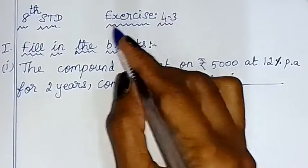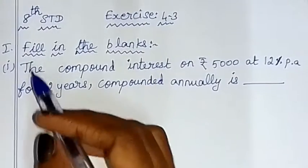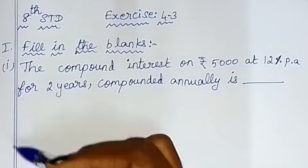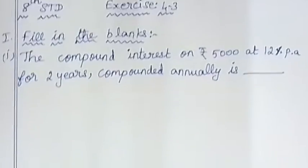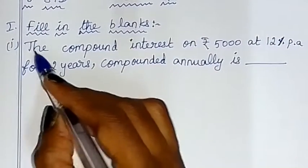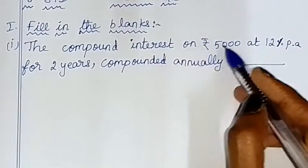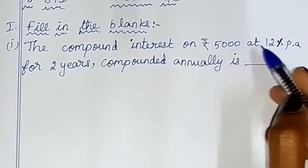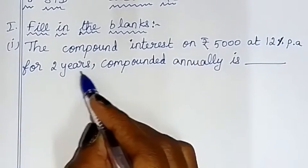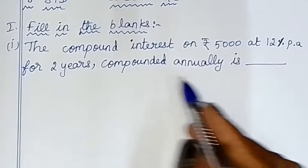Hello children, this is Exercise 4.3, sum number 1, Fill in the Blanks, 4 subdivisions. First sum: the compound interest on Rs.5,000 at 12% per annum for 2 years, compounded annually.